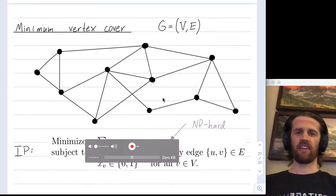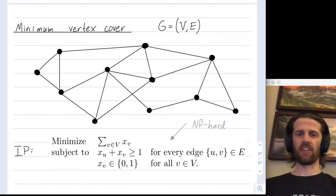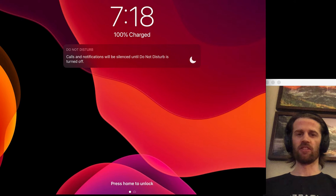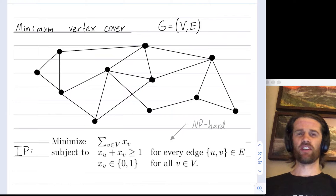I wanted to give a description of the minimum vertex cover problem in a graph. This is an integer program where you can approximate the solution via a linear program relaxation.